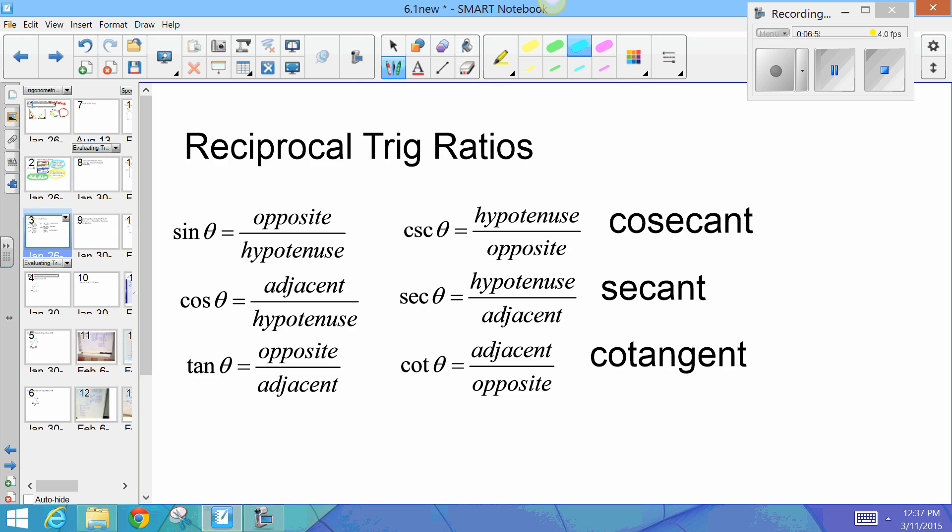Okay. Alright. So, now, here's the next thing you need to know. There are actually six. There are actually six. Even though, in physics class, you probably only learn three. There are six trig ratios. The second three are reciprocals of the first three.